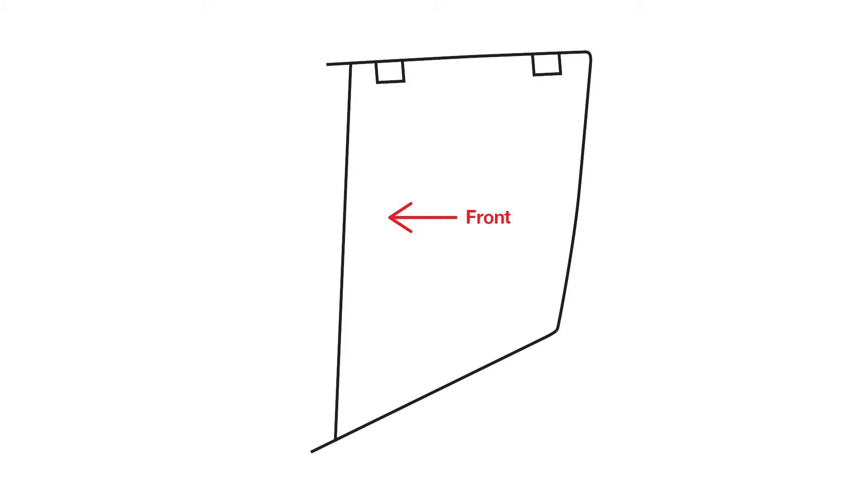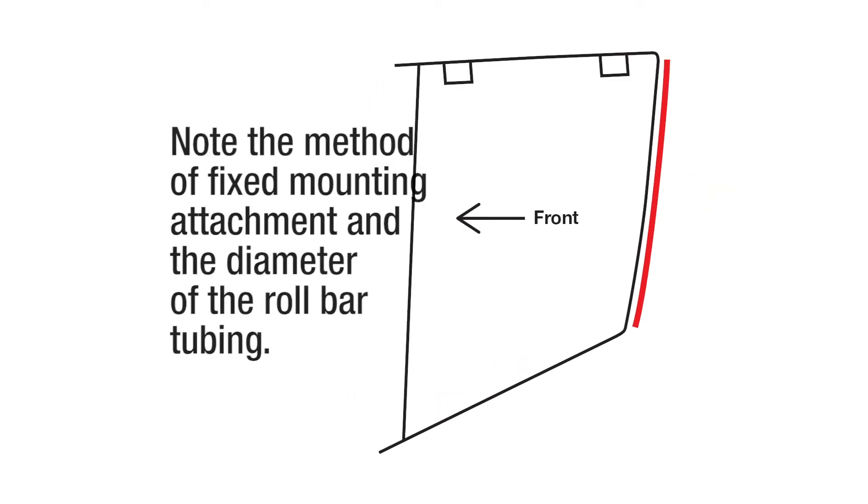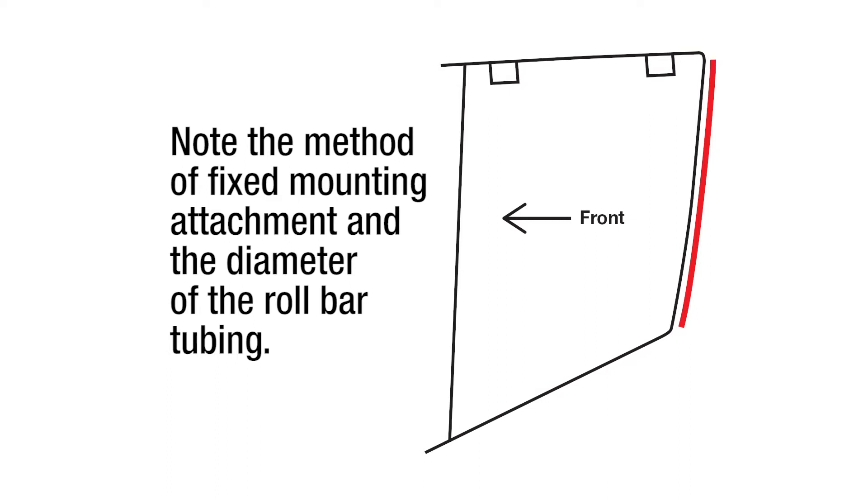Indicate the front of the vehicle with an arrow. Now, indicate on your drawing how far the attachment tabs extend beyond the edge of the roll bar to the inside of the opening. Next, show on the drawing where the fixed mounting of your net will be. This will either be at the bottom or at the back of the opening. It is important to note what method you will use for the fixed mounting edge. We also need to know the diameter of the roll bar tubing.